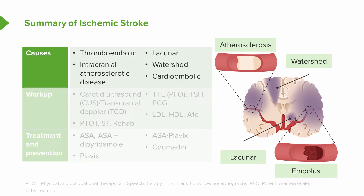The last type of ischemic stroke is the watershed stroke. This doesn't come from a blood clot — it's the one ischemic stroke that results not from a clot in a blood vessel but from reduced blood flow. We see this in areas where vascular beds are collateralizing, at those collateral watershed territories in between major vessels supplying the brain.